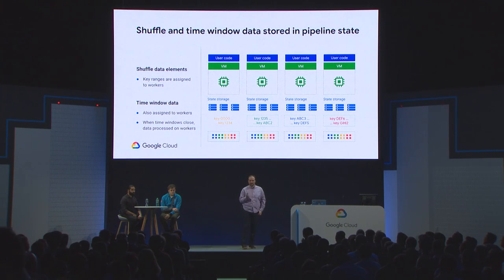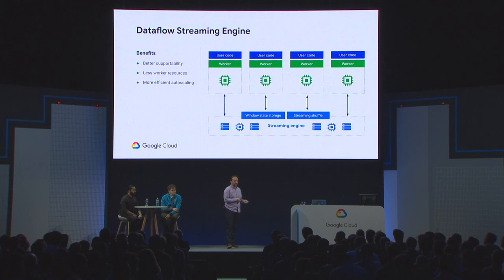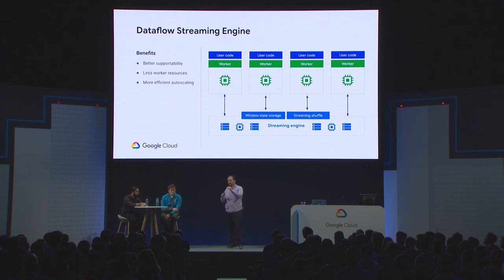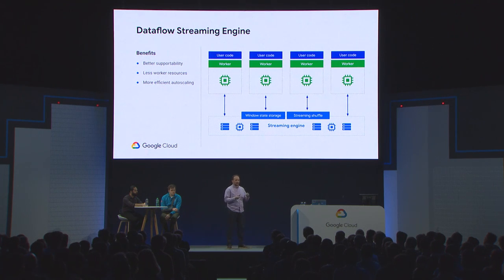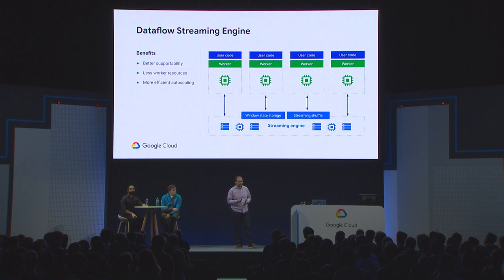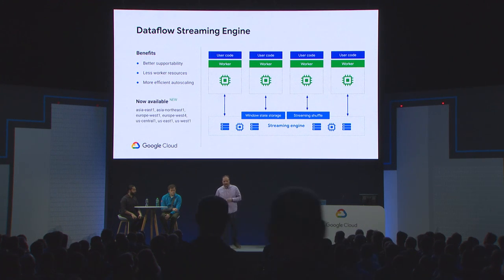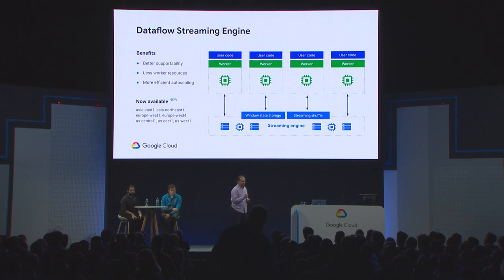The Streaming Engine solves this problem by separating compute from state storage. Compute is your CPU, memory, and some temporary space on the worker, but that compute unit communicates with a distributed database we call the Streaming Engine — a back-end service we operate for you. It's a distributed database that also provides useful functions such as shuffling. The benefit is that we can much more easily scale your pipelines, use less resources on the worker side so your user code gets more resources, and support this architecture much better. The Streaming Engine is now available in seven regions.